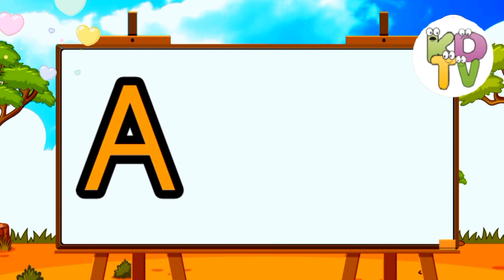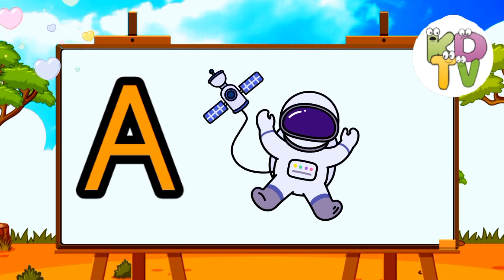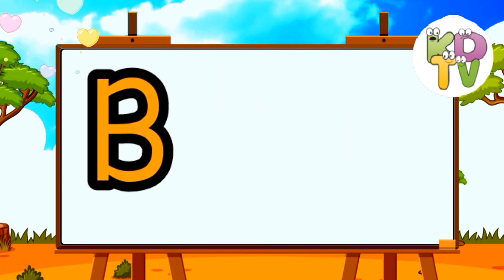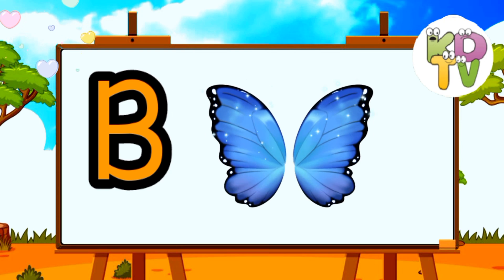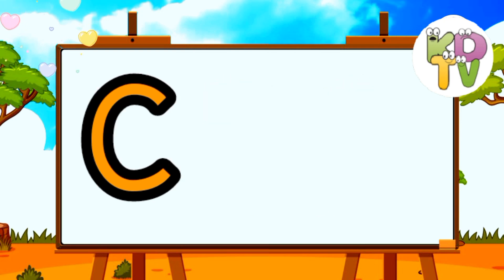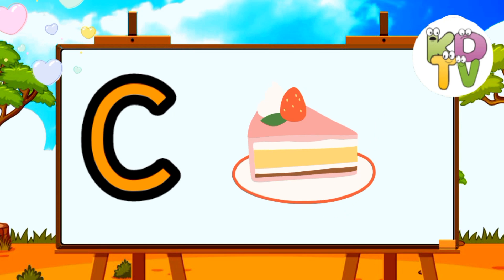A is for Astronaut. B is for Butterfly. C is for Kite.